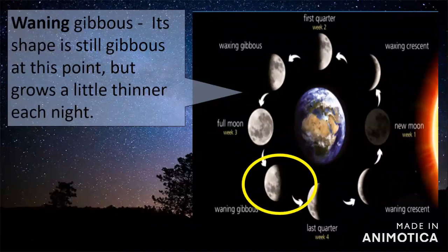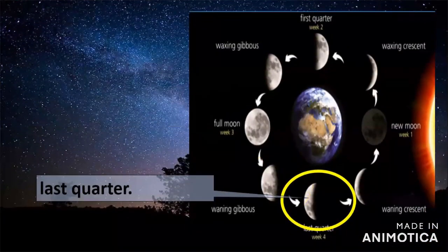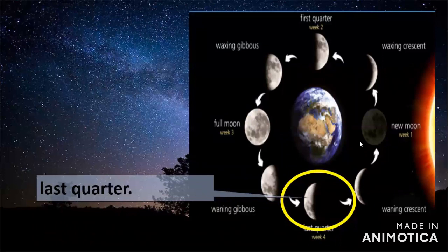During the second half of the lunar month, the moon grows thinner each night — we call this waning. Its shape is still gibbous at this point but grows a little thinner each night. As it reaches the three-quarter point in its month, the moon once again shows us one side of its disk illuminated and the other side in darkness — that is the last quarter.